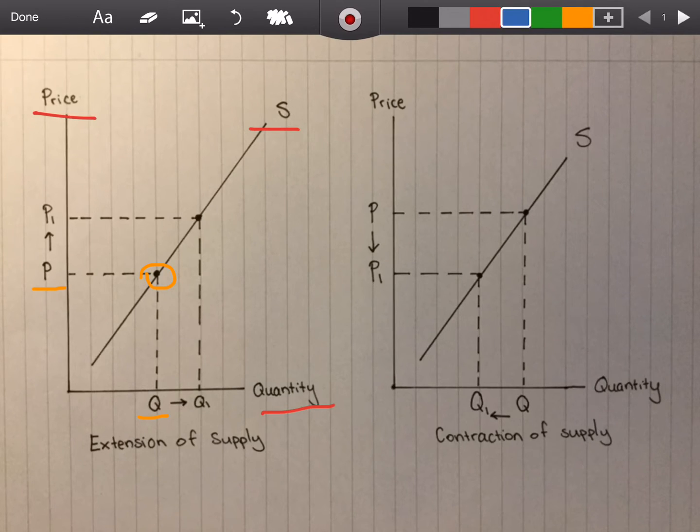Then I'm going to highlight in blue what it's changed to, to P1 and Q1, and you'll notice that I've used these arrows here to draw attention to the move.